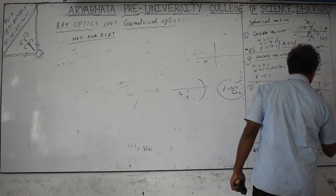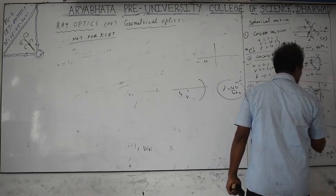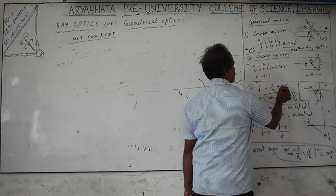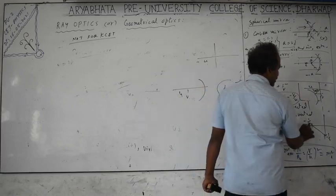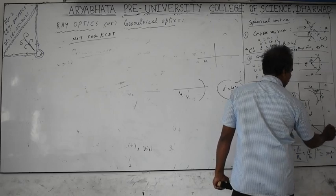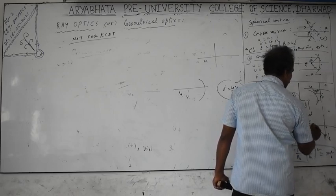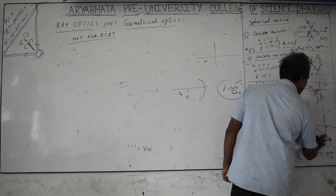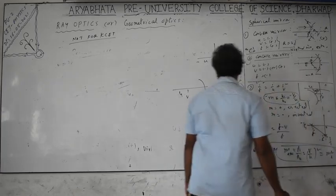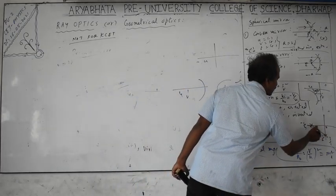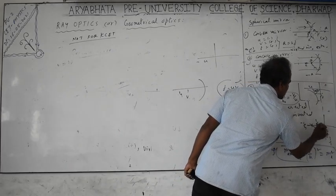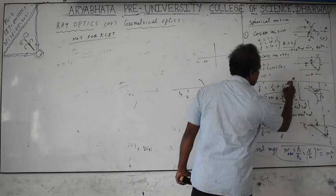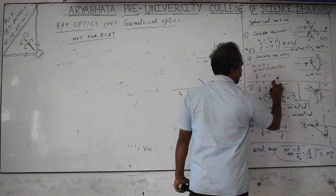The 1/u vs. 1/v graph is a straight line. The x-intercept is 1/f and the y-intercept is also 1/f, since when 1/v = 0, 1/u = 1/f, and vice versa. The intersecting point distances from the origin on each axis are both equal to 1/f. Both 1/u and 1/v are negative (taking negative axis values for a concave mirror with real images).